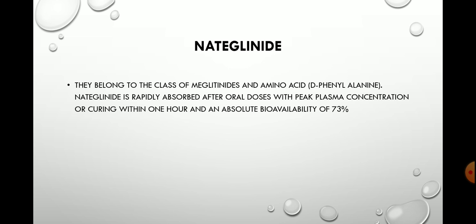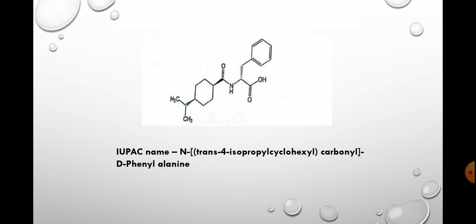The next drug used as a meglitinide is nateglinide. Nateglinide belongs to the class of meglitinides and is derived from the amino acid D-phenylalanine. Nateglinide is rapidly absorbed after oral doses, with peak plasma concentration occurring within one hour, and absolute bioavailability of 73%. This is the structure of nateglinide.